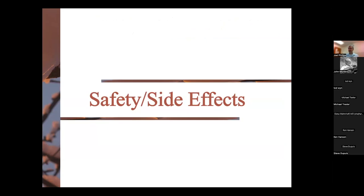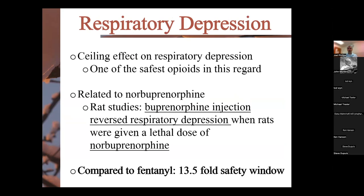Regarding safety and side effects: respiratory depression is always a concern with any opioid. Buprenorphine has a ceiling effect on respiratory depression, making it one of the safest opioids in that regard. If someone accidentally overdoses, they're not necessarily going to go into respiratory failure. Interestingly, a buprenorphine injection in rats with a lethal dose of norbuprenorphine actually reversed that respiratory depression by overwhelming the receptors with the parent drug. When compared to fentanyl, we're looking at a 13.5-fold safety window.